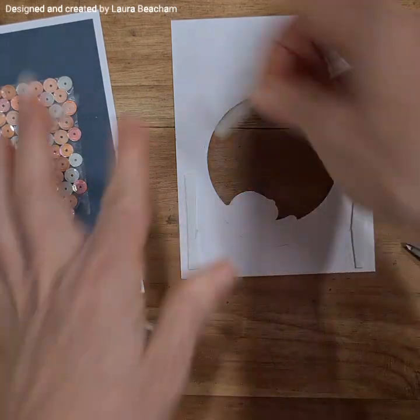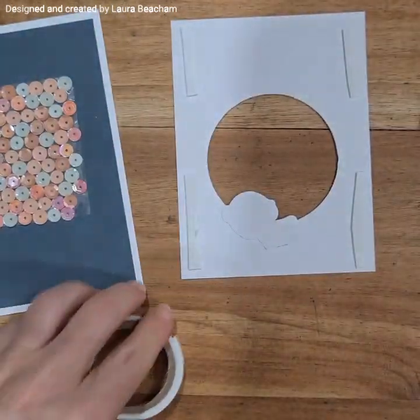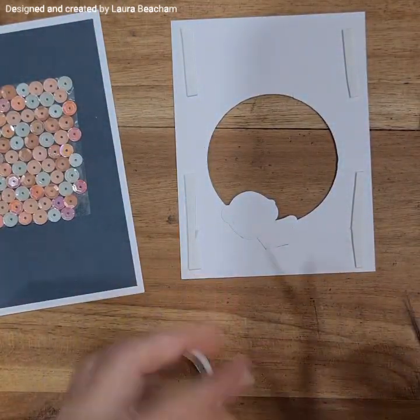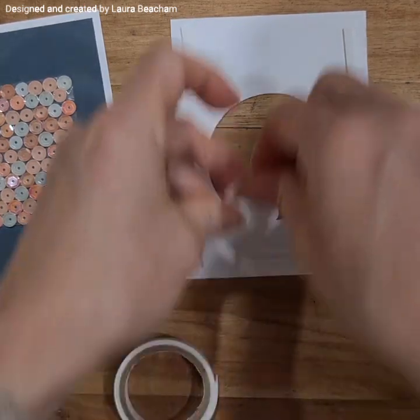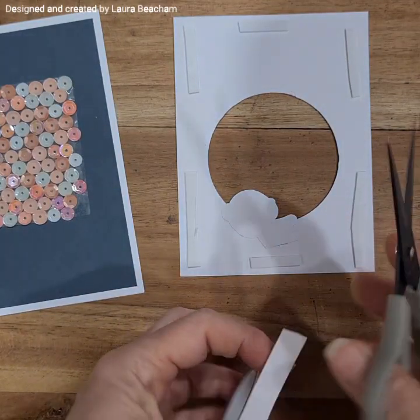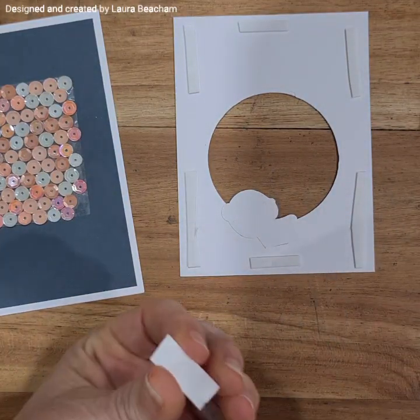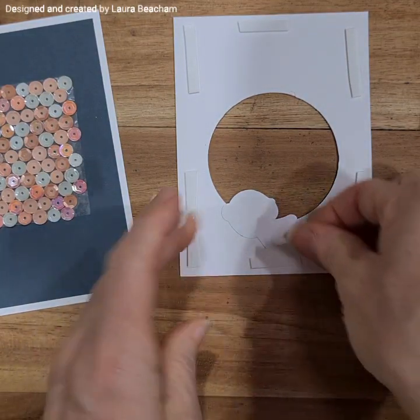This by no means is a shaker card, it's just a really glittery shimmery sequin card, but I have used that die cut from the shaker card die cut from Close To My Heart. You could definitely do this with other shapes as well. I just simply started with the circle.